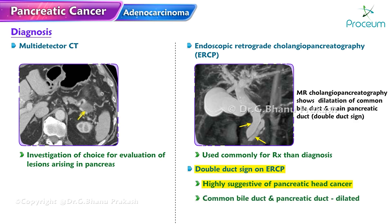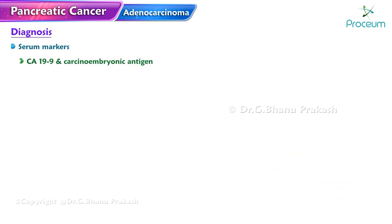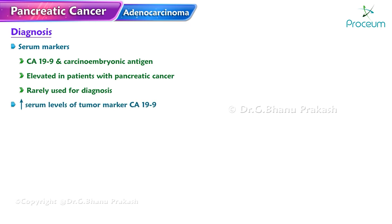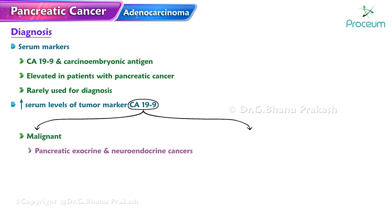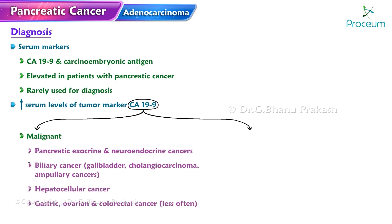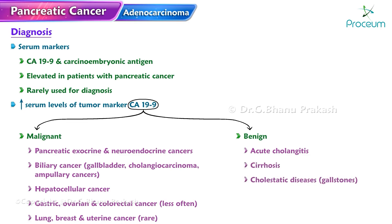When both the common bile duct and the pancreatic duct are dilated, this is known as the double duct sign. Serum markers CA 19-9 and carcinoembryonic antigen may be elevated in patients with pancreatic cancer but are rarely used for diagnosis. Conditions associated with increased CA 19-9 levels include malignant pancreatic exocrine and neuroendocrine cancers, biliary cancers, gallbladder cholangiocarcinoma, ampullary cancers, hepatocellular, gastric, ovarian, and colorectal cancer, and benign conditions such as acute cholangitis, cirrhosis, and other cholestatic diseases including gallstones.